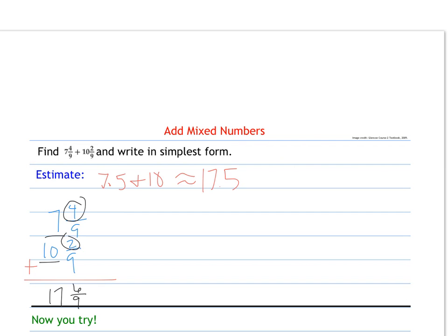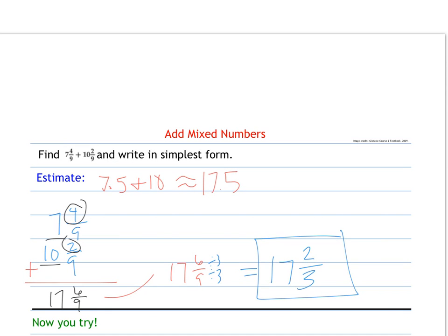Remember to simplify, so I have 17 and 6 ninths. Well, 6 and 9 share a factor of 3. So this is the same as 17 and 2 thirds, which is close to my estimate, slightly more. So not too bad.